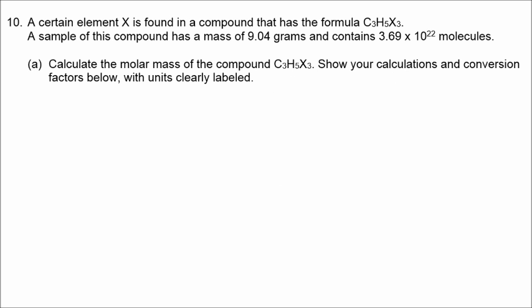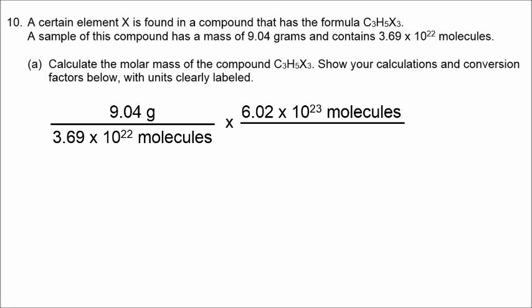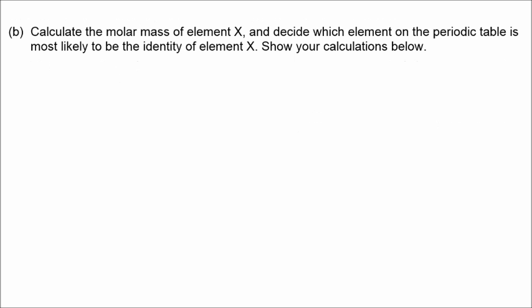Okay, in number 10, we have a substance that has a mass of 9.04 grams, and it contains 3.69 times 10 to the 22nd molecules. So let's go ahead and cross off molecules using Avogadro's number, and then with one mole on the bottom, if we do this math, we'll get our molar mass, grams per mole. It works out to be 147, rounded off to 3 sig figs, so that is our answer for part A.